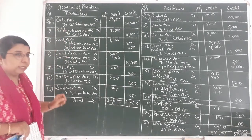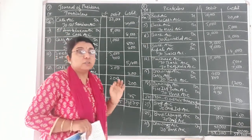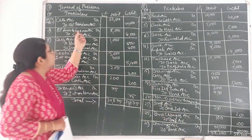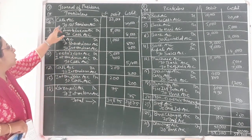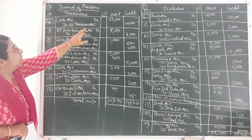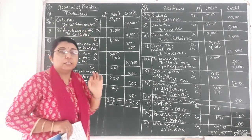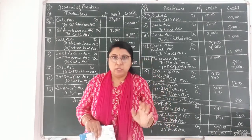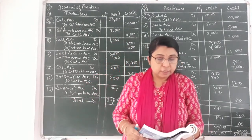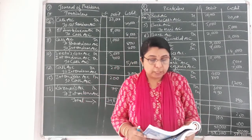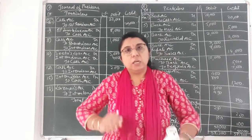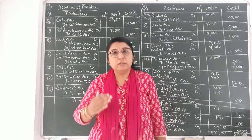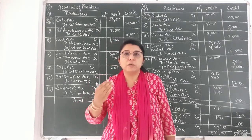I have not written the narration here, but students narration is compulsory to be written after each and every journal entry. The narration for this entry is: being loan borrowed from RAM at a 12% rate of interest. You can write it in your own words, but it should always start with the word 'being'. Next journal entry is third date: Rs. 8,000 lent to Lakshman at interest rate of 8%. Over here the loan is lent — we have given the loan to Lakshman.